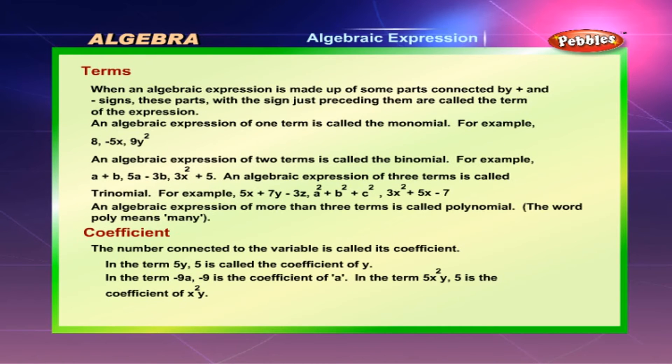An algebraic expression of two terms is called a binomial. For example: a + b, 5a - 3b, 3x² + 5.